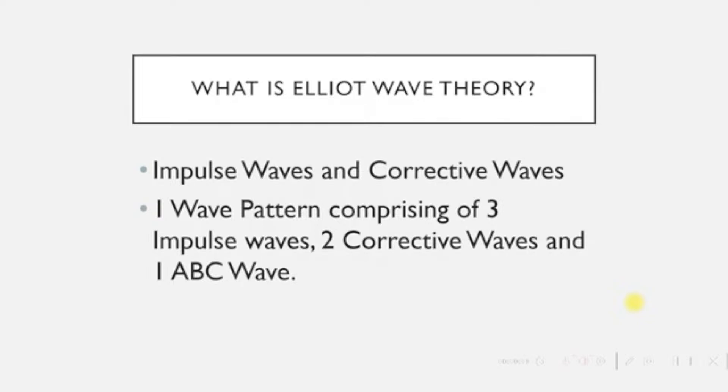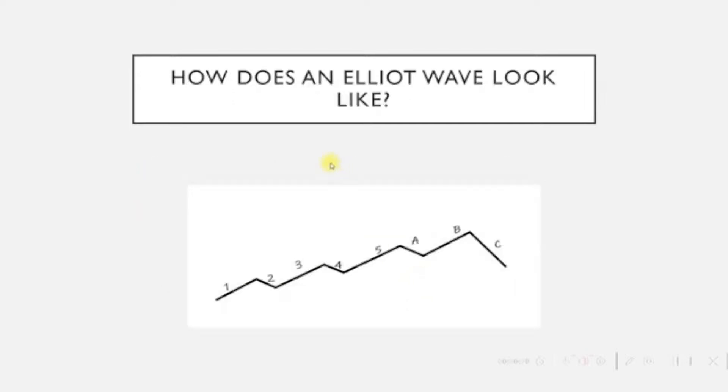In this session we will explain what Elliot Wave Theory is. As part of it, we will see what are impulse waves and corrective waves. We will also see what is one wave pattern comprising of three impulse waves, two corrective waves, and one ABC wave. Finally, we will see how an Elliot wave looks like.